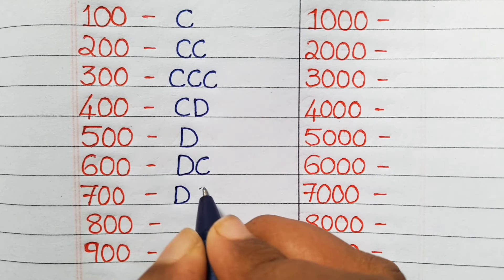Coming to the thousands, for one thousand we write as M. And for two thousand we note it as MM (two M's) in Roman numerals. And for three thousand we note it as three M's (MMM).